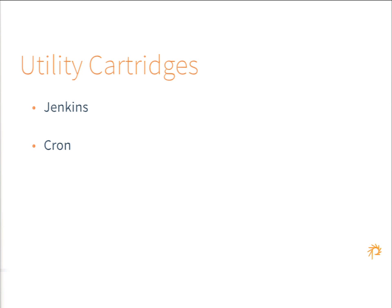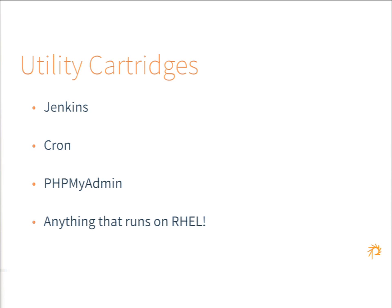There is also the Cron cartridge, which makes it easy to run any task on a regular basis so your app can take care of housekeeping tasks. There's a phpMyAdmin cartridge if you want to open your database for inspection — you could add it, do some work, then remove it. Every app has to have a primary cartridge — it's going to be primarily a Ruby or PHP app — but you can add and remove other cartridges as needed. If you want to add Redis caching to your Drupal app, you can absolutely do that.